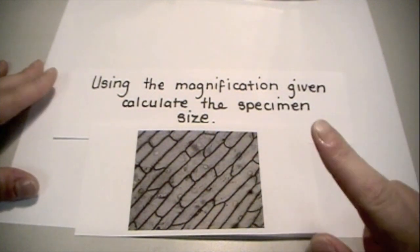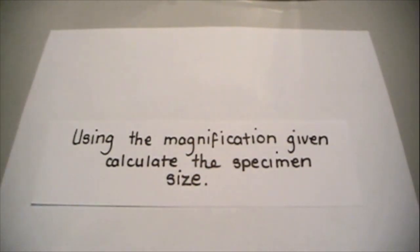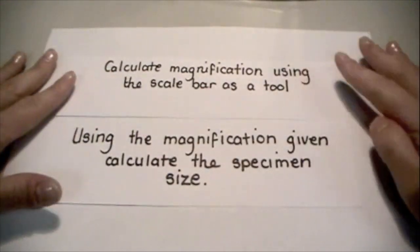But what if we're not given the magnification? So if we're not given the magnification, we're given something known as a scale bar instead, then we need to start in a slightly different order.